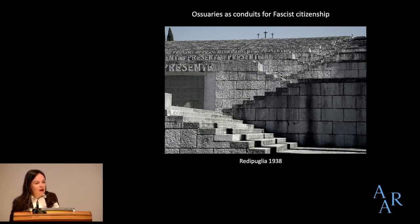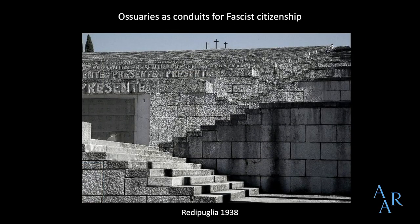The ossuaries are particularly interesting as they give material form to fascist ideas of citizenship. The regime promoted citizenship through various ways, but most obviously through the use of physical spaces. The ossuaries are an example of a space built with the purpose of communicating fascist ideas of citizenship. I will first talk about the historical context in which the ossuaries emerged, then look at three aspects of fascist citizenship as reflected through the ossuaries.